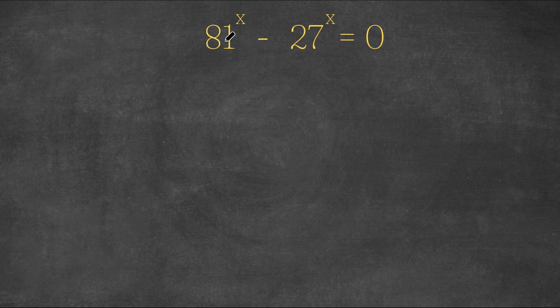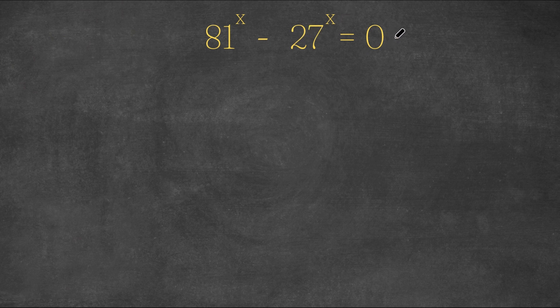So we have 81 to the power of x equals 27 to the power of... sorry, we have 81 to the power of x minus 27 to the power of x equals 0.